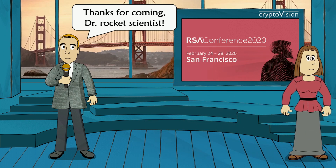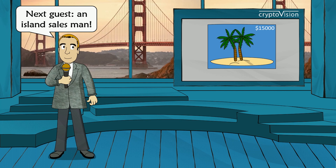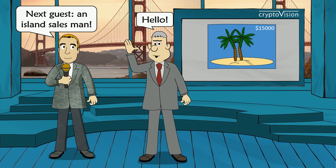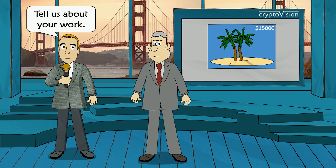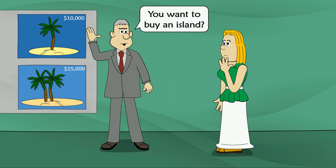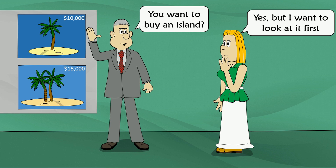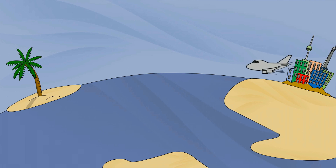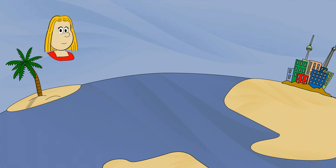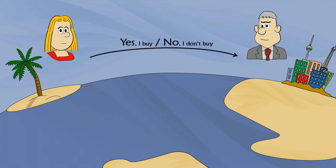My last guest is an island salesman. Recently, Alice came to see this island salesman, who asked her: do you want to buy an island? Alice said yes, but I want to look at it first. So she took an airplane from her home city to the island, looked at it, and took a decision. Then she wanted to tell the island salesman her decision, but it was a pretty bad connection — only a few bits or bytes could be transmitted. In theory, it was enough to transmit one bit — yes or no. But both can cheat in this process.